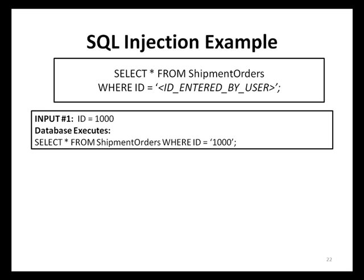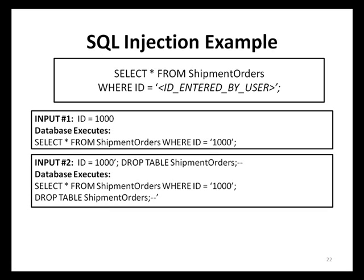In the first scenario, input ID is set to 1000 — the database executes 'SELECT * FROM shipment_orders WHERE ID = 1000' and retrieves the expected data. In the second scenario, the malicious user enters: 1000'; DROP TABLE shipment_orders;--. The database server sees two SQL queries: retrieve order 1000, then drop the entire shipment_orders table — deleting all shipment data. The double dashes comment out the trailing quote and semicolon that would have imbalanced the SQL query and caused a database error.